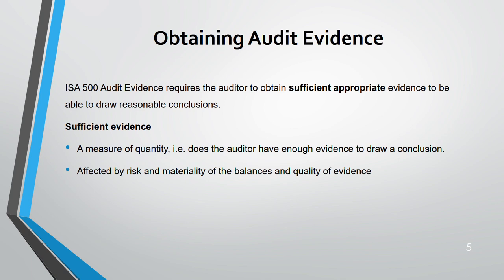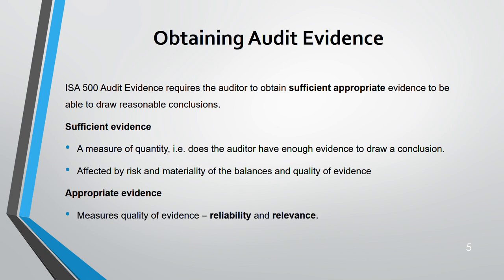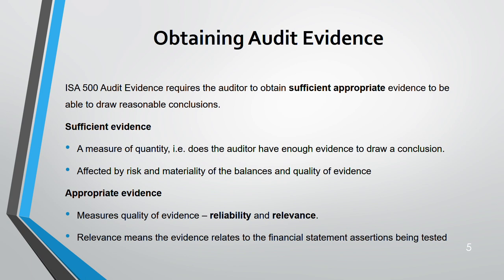Sufficiency — this quantity — is affected by your risk, materiality, and the quality of evidence. If something is highly risky, you need more evidence. If your evidence is of high quality, maybe you don't need as much quantity. Appropriateness measures quality. Quality is measured in terms of reliability and relevance. Relevance means whatever evidence you collect should relate to the financial statement assertion being tested. We will go through financial statement assertions shortly.